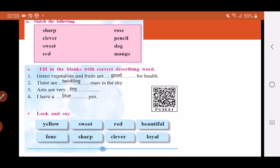Now let's look and say these words. These are all describing words: yellow, sweet, red, beautiful, four, sharp, clever, loyal. So children these are all the describing words that we read in today's lesson.